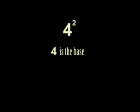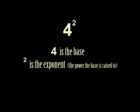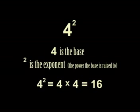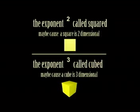When you see something like four to the second power, four is the base, two is the exponent, or the power the base is raised to, which means four is multiplied by itself, which gives us four times four. The exponent two is called squared, maybe because a square is two-dimensional. The exponent three is called cubed, maybe because a cube is three-dimensional.